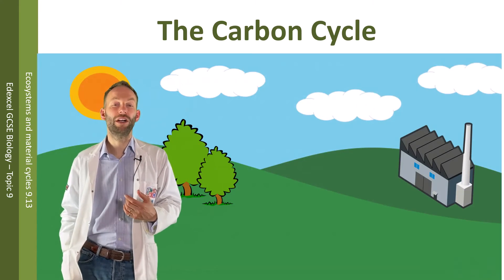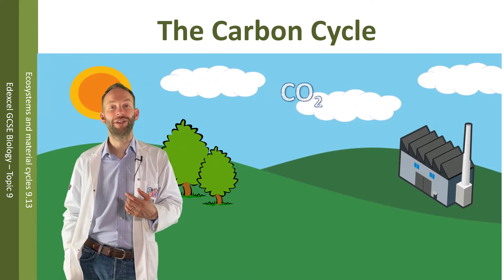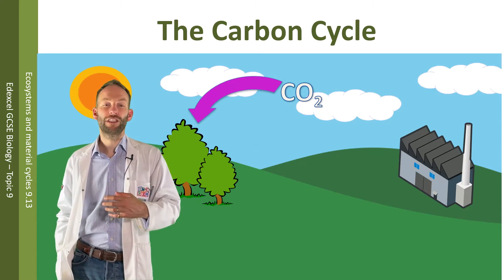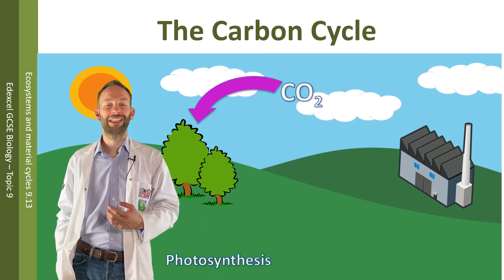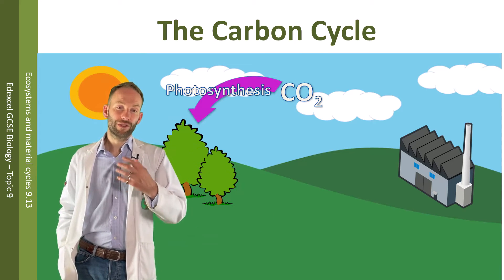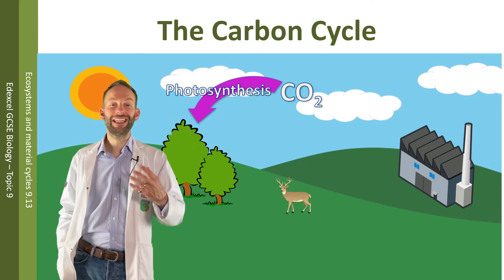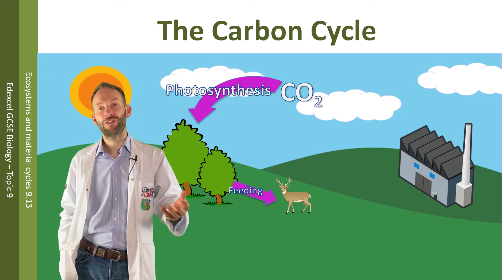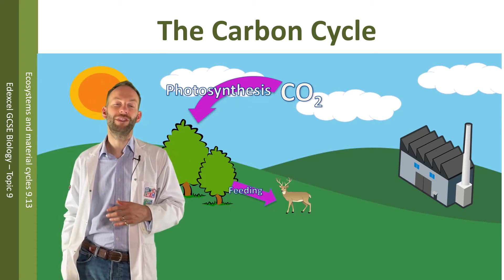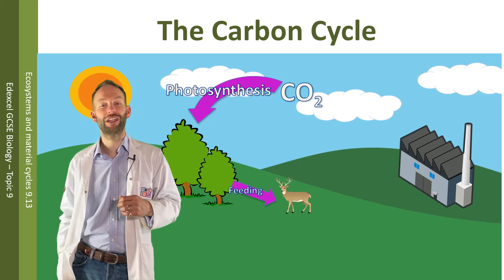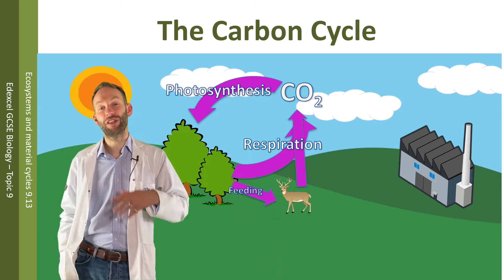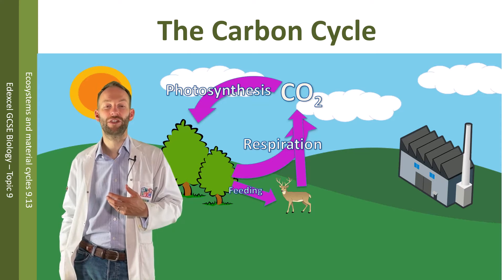Here is a simple diagram showing this process. Here's the carbon dioxide in the air. First of all, photosynthesis means it gets stored in the trees. Consumers will then feed, and the food chain will happen, and carbon will move through the different organisms in the food chain. But they will return some of that carbon back to the air when they respire and release carbon dioxide.